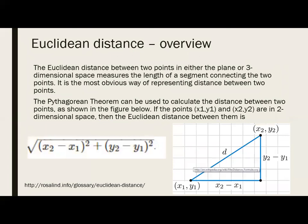Euclidean distance overview: the Euclidean distance between two points in either a plane or three-dimensional space is the length of the segment connecting those two points — the most obvious way of representing distance. In simpler terms, it is a method to measure the distance between two given points, whether in 2D or 3D.